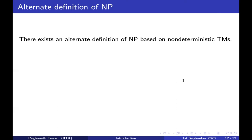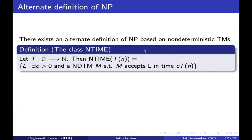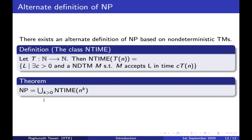Similar to DTIME, we can define NTIME(t(n)) as the class of all languages such that there is a constant c and a non-deterministic Turing machine M that accepts L in time c·t(n). Now I can define NP as the union over k > 0 of NTIME(n^k).